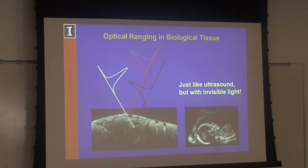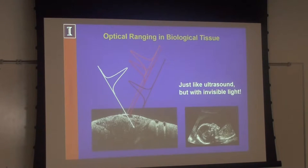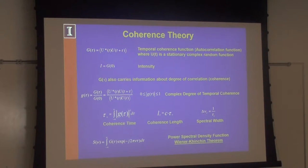OCT is based on optical ranging, just like ultrasound to reconstruct images, but instead we put in pulses of light or CW broadband light and look at reflections that come back. With ultrasound we can use detectors because the speed of sound is slow enough, but with light we have to use interferometry to be able to measure where those reflections came from. That brings up coherence theory.